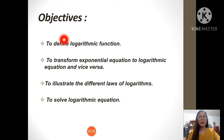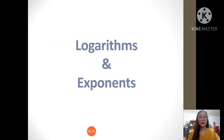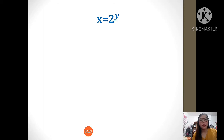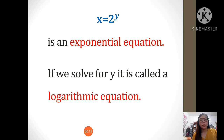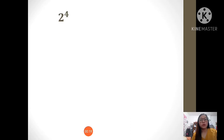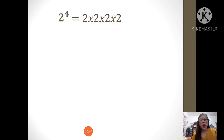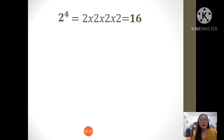Now, to define logarithmic function, let's proceed. Logarithms and exponents are pretty closely related. We have here x equals 2 raised to y. This form is an exponential equation. If we solve for y, it is called the logarithmic equation. What is 2 to the power of 4? It is 2 times 2 times 2 times 2, which is actually equal to 16. The power of the base tells us how many times the base is multiplied by itself. So, 2 to the power of 4 equals 16. We have studied this in exponents.